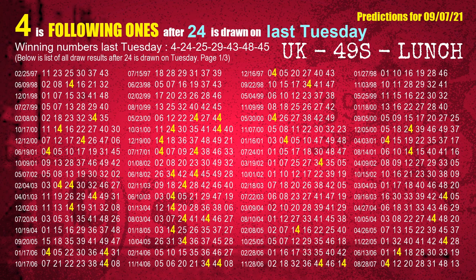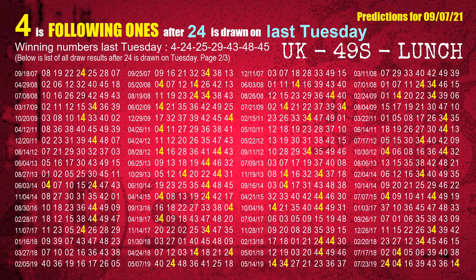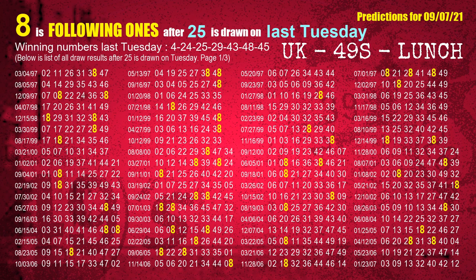The second winning number last Tuesday is 24. The most frequently following units digit is 4 when 24 is the winning number. The third winning number last Tuesday is 25. The most frequently following units digit is 8 when 25 is the winning number on last Tuesday.